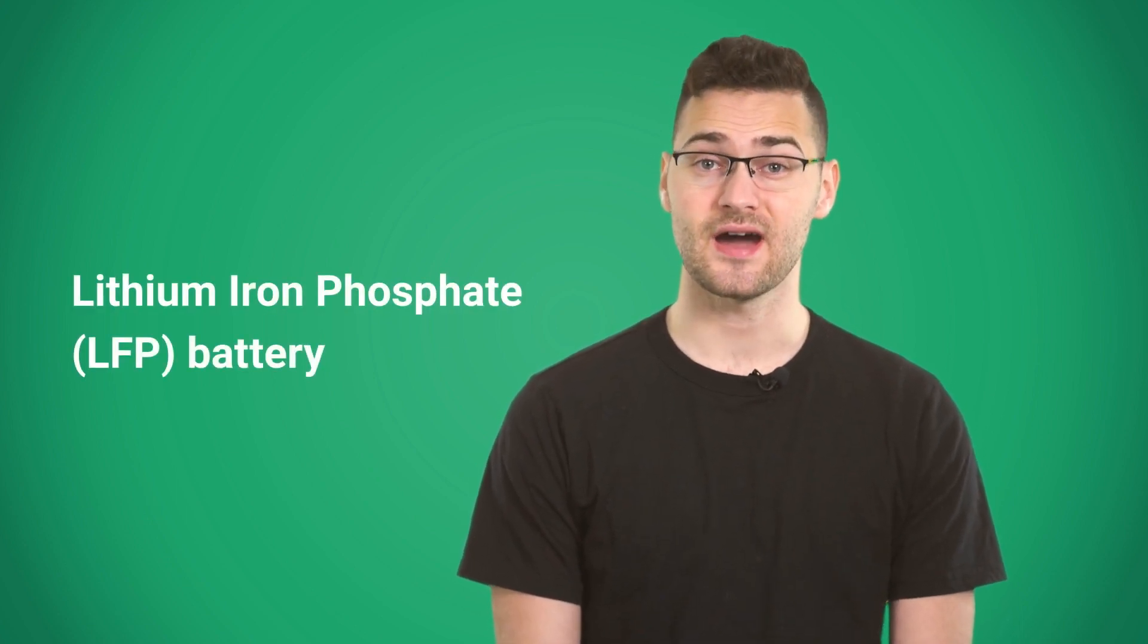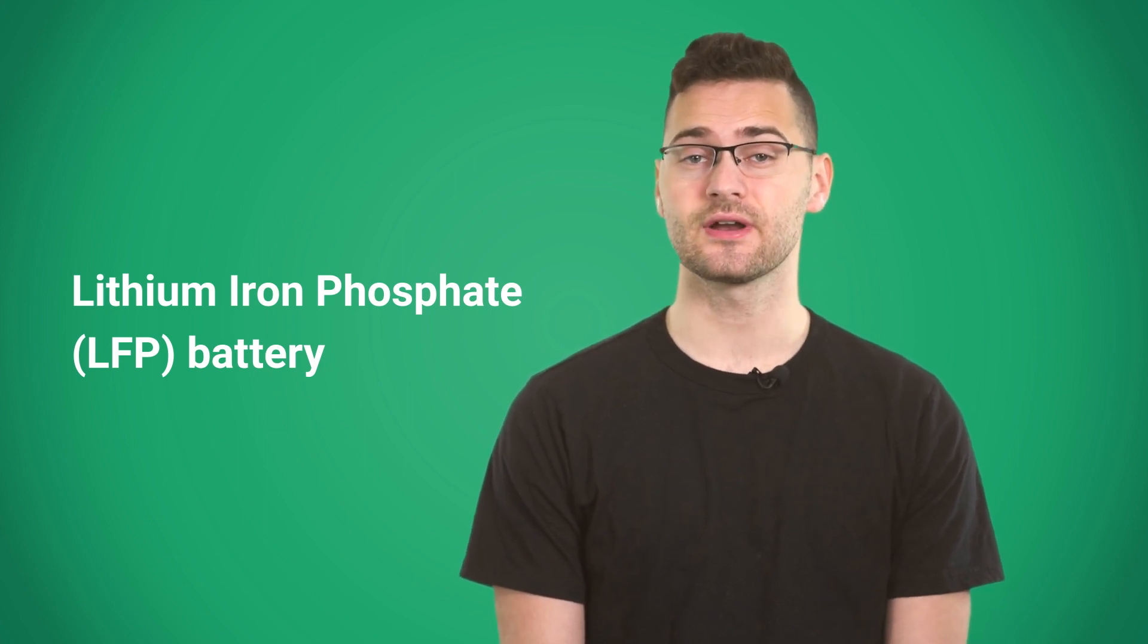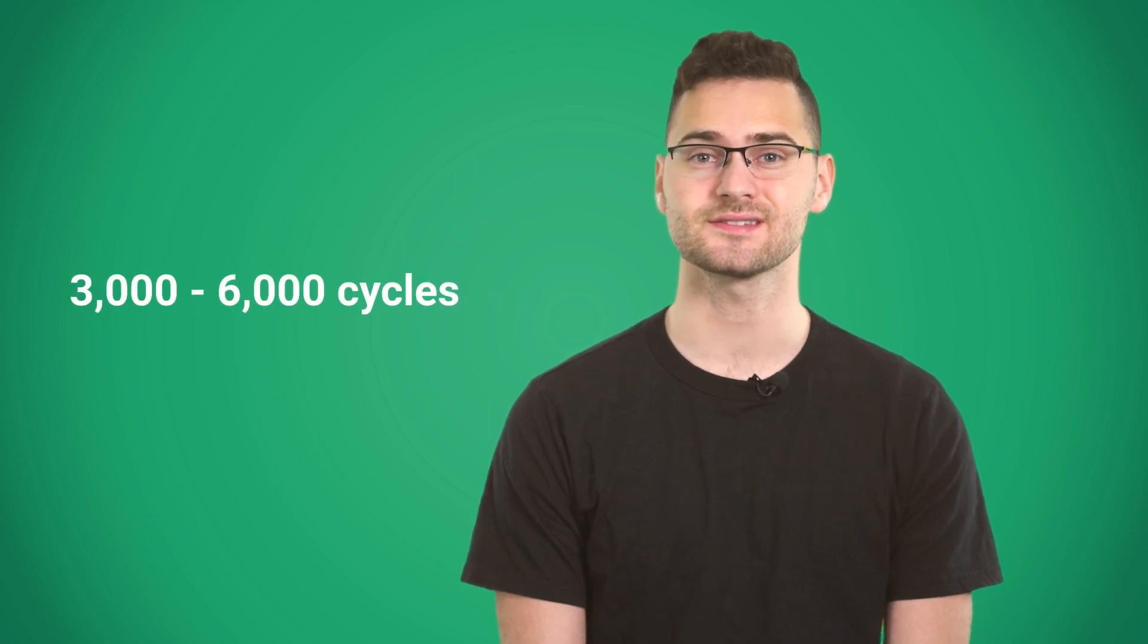Its direct competitor and probably the best type of battery for a solar system is lithium iron phosphate or LFP battery. Compared to NMC, it is safer and more reliable. It can withstand anywhere from 3,000 to 6,000 cycles, and you can use it for 10 years easily.